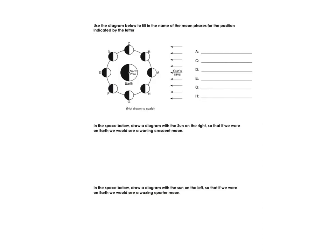In this question, we're going to use the diagram below to fill in the name of the moon phases for the position indicated by the letter. So once again, we're going to locate where we have the sun's rays. We have our alignment here, so we know that this is position one. We're going to work counterclockwise to count all the way to eight. We are going to then put the names of each of the positioning over here, starting with the new moon.